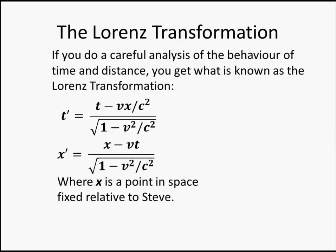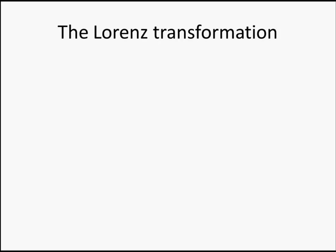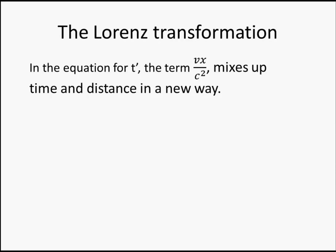These are called the equations of the Lorentz transformation, after a Mr. Lorentz who originally came up with them as a fiddle to fix Maxwell's equations, but he didn't know why. Note that in the equation for t-dash, the term vx over c-squared occurs in the numerator, which mixes up time and distance in a completely new way. Quite apart from the weird behaviour in length and time, the Lorentz transformation equations show us an interconnectedness of space and time. Prior to relativity, space and time were considered completely different quantities. Now, space and time are shown to be intertwined, and to understand the universe we have to talk in terms of space-time.